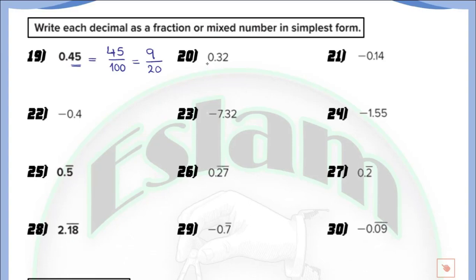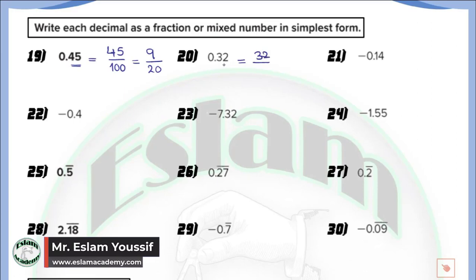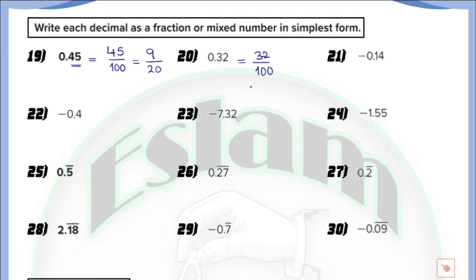In question number 20, we have 0.32. There is no whole number, so the answer is a fraction. Write 32 as the numerator. We have two digits at the right of the decimal, so we write 100 as the denominator. If we have one digit the denominator is 10; two digits gives 100; three digits gives 1000. Now 32 over 100 is not the simplest form — we can divide both by 4. So 32 divided by 4 equals 8, and 100 divided by 4 equals 25, giving 8 over 25.